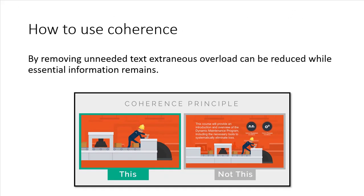How to use coherence principle is really very simple. According to the theory, by removing unneeded text, pictures, video, animation, or whatever, you reduce the extraneous overload that students have. By reducing that extraneous information, what remains is the essential information that the students need.